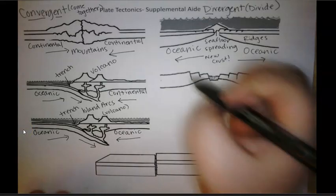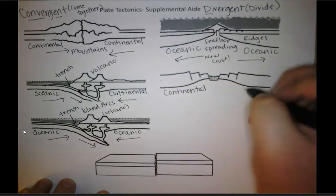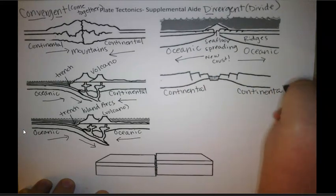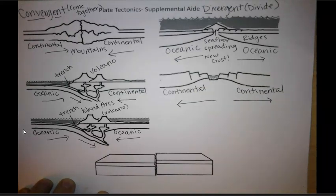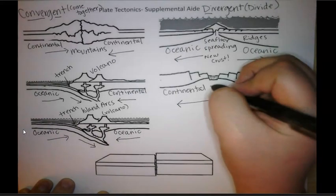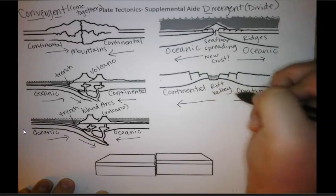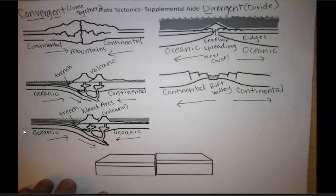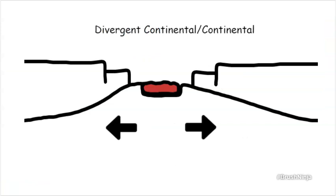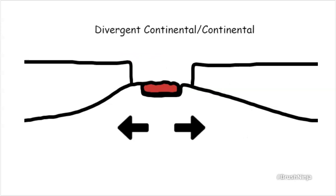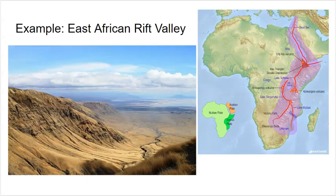Our next divergent boundary is continental-continental. These plates are dividing or moving apart. When this happens, we're pushing land apart, so this is where we get rift valleys — where the land is pushing apart. We also sometimes have some volcanic activity and we definitely have some earthquakes. A common example is the East African Rift Valley, which runs across the entire eastern side of the continent of Africa, creating these big valleys.